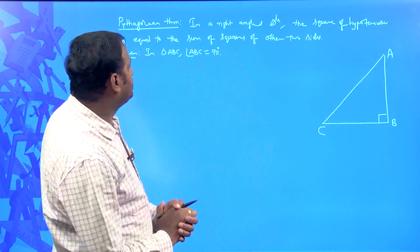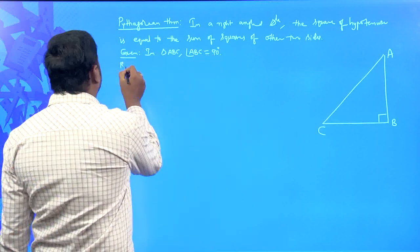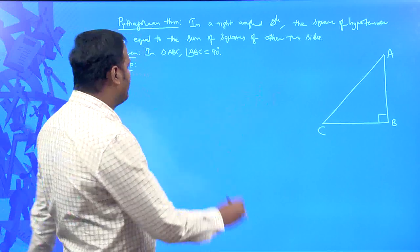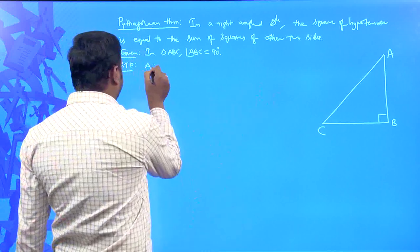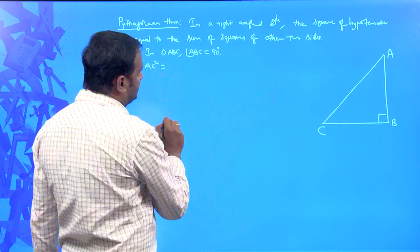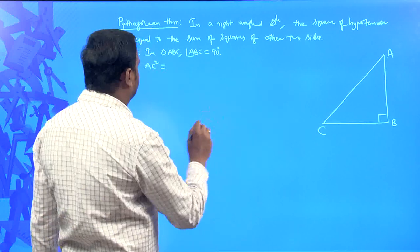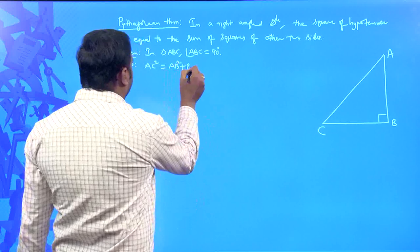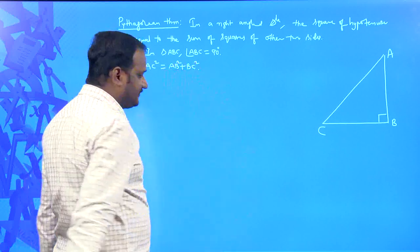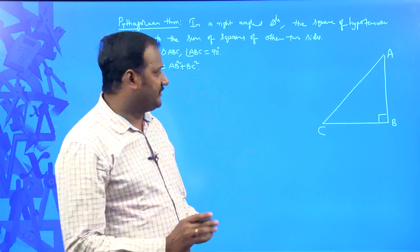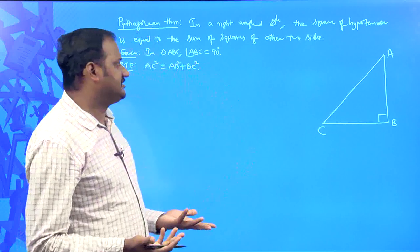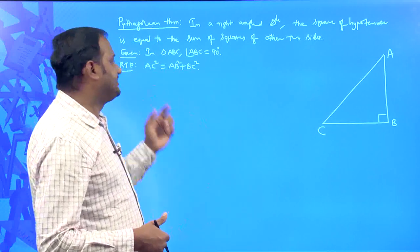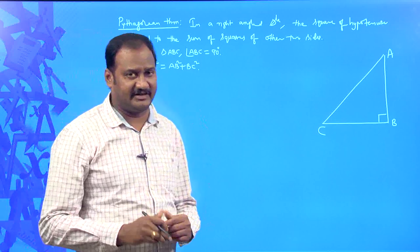What are we going to prove here? We are going to prove that the square of the hypotenuse — what is the hypotenuse here? AC is the hypotenuse. So, the square of the hypotenuse is equal to the sum of squares of the other two sides. It means AC² = AB² + BC². This is what you are going to prove. Now, how do we prove this? Is there any information given to prove that AC² = AB² + BC²? You need to think logically.